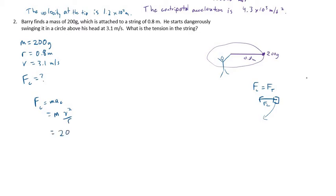Our mass here is 200 grams, and this is physics, so we used SI units. So this is 0.200 kilograms, and the velocity is 3.1 meters per second, and that has to be squared, and the radius is 0.8 meters.